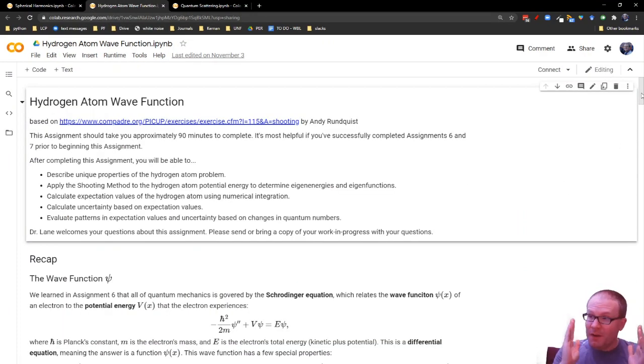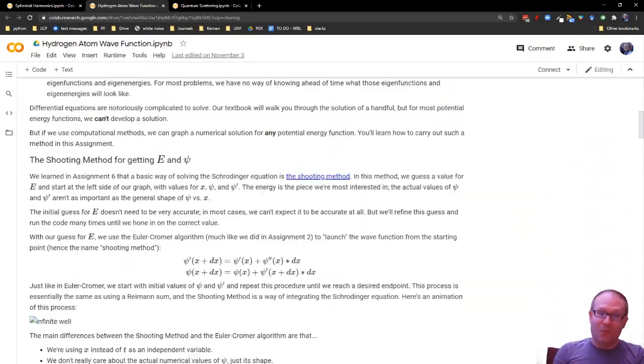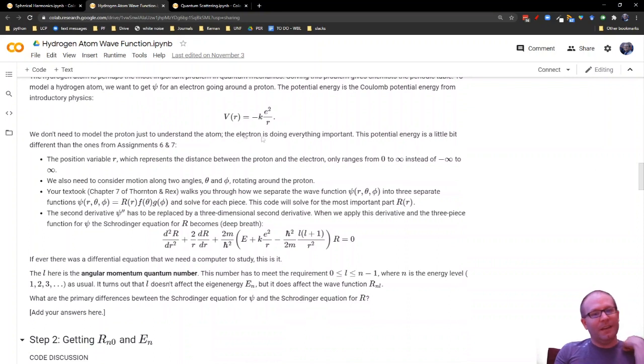So that's the angular part of the hydrogen atom wave function. Then we need the radial part. This is a one dimensional problem, so we can use the shooting method once again. The main difference now is we have our potential energy here of negative ke squared over r. And we have to take these derivatives and make them 3D. Because even though we've separated the variables, we still have to take into account the fact that r exists in a 3D space. So you have the second derivative of the wave function just like you had before. Then you have this other piece here, this 2 over r dr/dr.